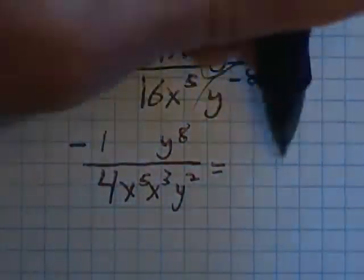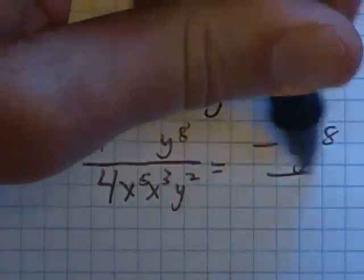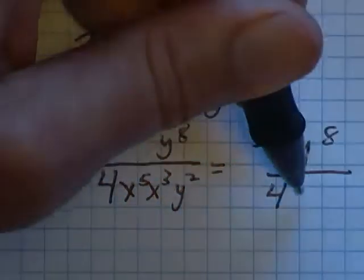Now I'll do some simplifying. One times negative eight, negative one times y to the eighth, negative y to the eighth. Let's see, down here I have a four. Four x to the fifth times x cubed, that's x to the eighth, eight of them, y squared.